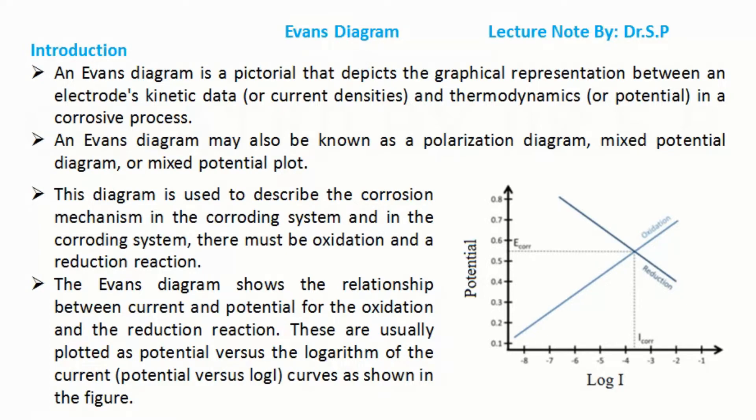The Evans diagram shows the relationship between current and potential for the oxidation and the reduction reaction. These are usually plotted as potential versus the logarithm of the current (potential versus log I) curves as shown in the figure.